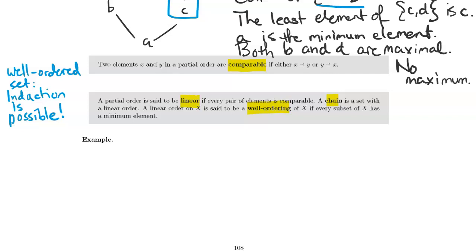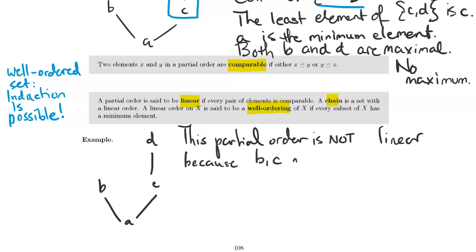Let's see another example. This partial order is not linear because, for example, B and C are not comparable. I could have said B and D instead. One way you can tell visually that they're not comparable is there's no path from one up to the other. If I were going to go from B to C or vice versa, I'd have to travel down to A. We don't really travel down in a partial order. We only ever travel up.